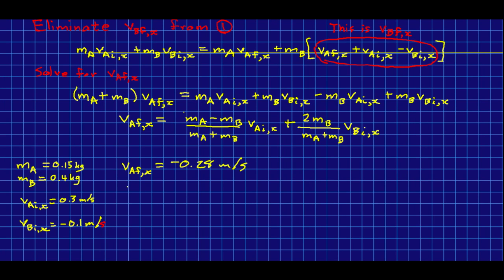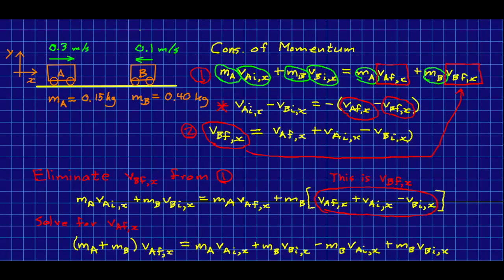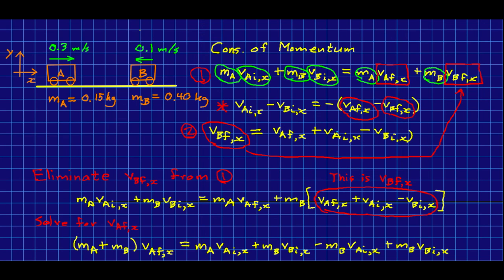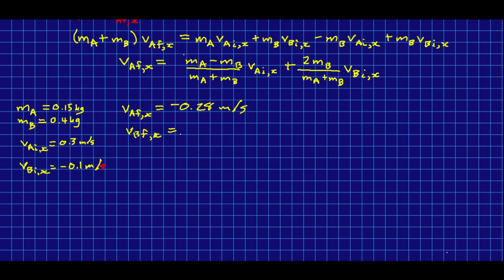If we want the other velocity as well, then we can get it easily, because from the relative speed equation here, we've already solved for it, and we now know all these velocities, so we can just substitute them in, and if you do, you find this.